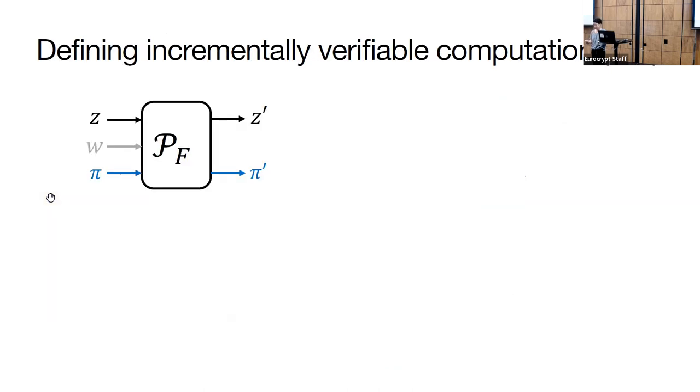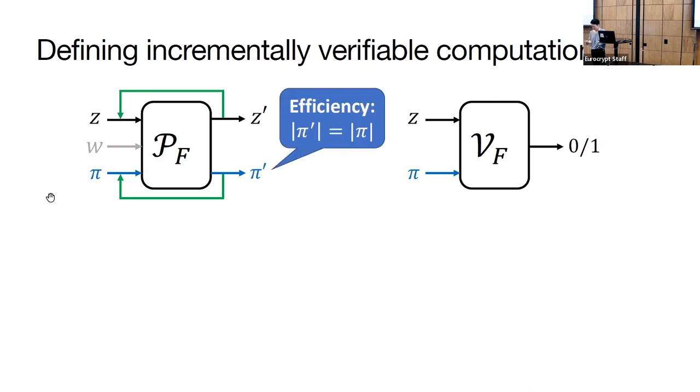Let's define IVC. On the top left, we have an IVC prover who takes as input a previous state Z, a proof Pi, and a witness W. With these inputs, the prover outputs a new state Z' and a new proof Pi'. Then this new state and proof pair becomes the input into the next prover. This is shown by the green arrows in the picture. This can run many, many times. On the top right, we have the IVC verifier. At any time step, the verifier takes a current state Z, a current proof Pi, and outputs one if the entire computation so far is correct.